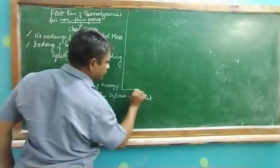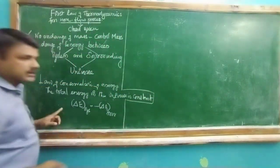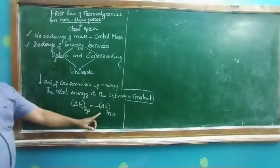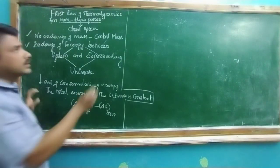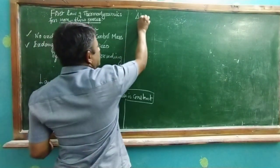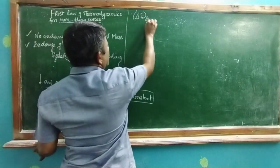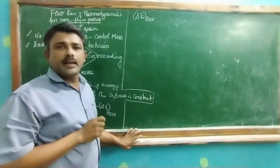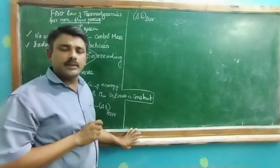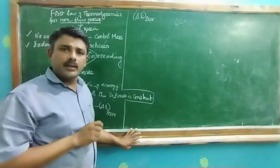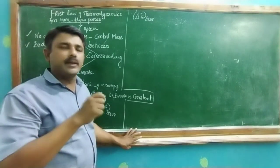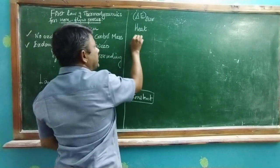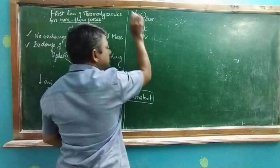Let us see one by one. What about the changes in energy of the system? What about the changes in energy of the surrounding? Changes in total energy of the surrounding occur only through exchange of heat and work with the system.